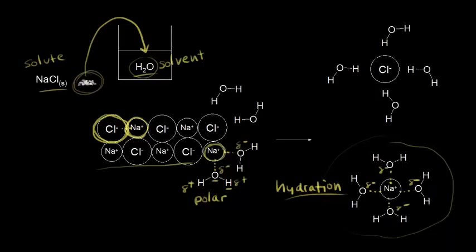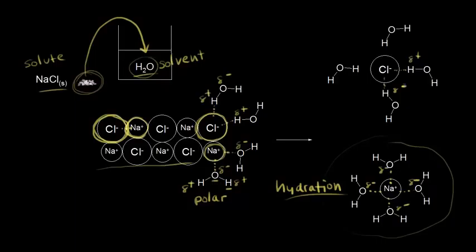The same thing happens with the chloride anion, which is negatively charged. This time, the negative charge is attracted to the positive part of the polar molecule — the hydrogen is partially positive. Opposite charges attract, so the positive charge interacts with the negative charge, and those water molecules pull off the chloride anion and move it into solution. The partial positive hydrogens interact with the negatively charged chloride anion — again, ion-dipole interactions. The end result is each sodium cation and each chloride anion is surrounded by water molecules, so the sodium chloride has dissolved in water and we've formed an aqueous solution.